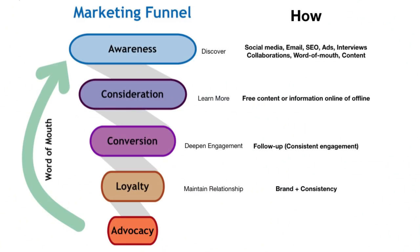So this is what a marketing funnel looks like. It's split up into five categories: awareness, consideration, conversion, loyalty, and advocacy. I've put it into my own words. Awareness is basically the discover phase — however you find out about something, however you discover it. That means when you're on Google and something pops up in the search results, it can be an ad on TV or a website, you can be watching an interview on The Breakfast Club and figure out you want to know who this person is — some kind of collaboration, word of mouth, or however you discover someone's content.